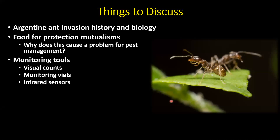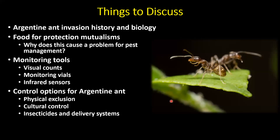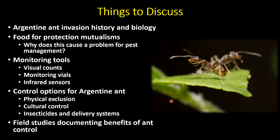We'll go over some monitoring tools for estimating Argentine ant densities in orchards — visual counts, monitoring vials, and new work with infrared sensors that have the potential to automate counts, so you'll never have to crawl under another tree to count ants. Then we'll go over control options: physical exclusions, cultural controls, and insecticides, including two liquid baiting delivery systems. We'll also discuss large-scale field studies documenting the benefits of ant control.